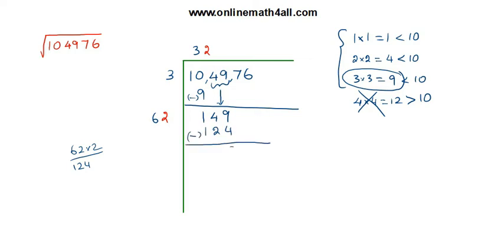When we subtract: nine minus four is five, four minus two is two — giving twenty-five as the remainder. Now what we need to do is multiply the quotient number thirty-two by two, which gives sixty-four, and that sixty-four is written in the next divisor position.